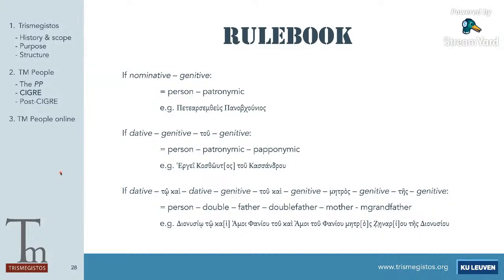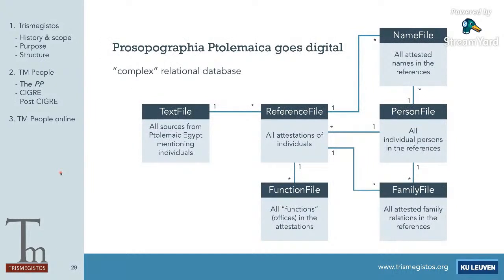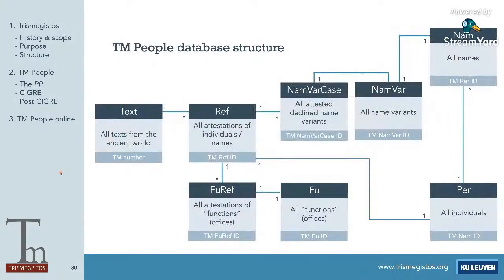Thanks to this procedure, we were able to add some 350,000 attestations of names from Greek papyri and ostraca. Together with the data added manually from the Egyptian material, we ended up with 493,000 attestations in 2011. This new procedure also led us to expand on the database structure of the PP. We added the name and name-case tables to deal with name variants and declined name variants. The family relations database was discarded because we solve that now by doing self-loops with the person database, and the function database has also been expanded — we now have a function-attestation database dealing with attestations of functions and a function database that is the overarching table grouping together all attestations that refer to the same function.